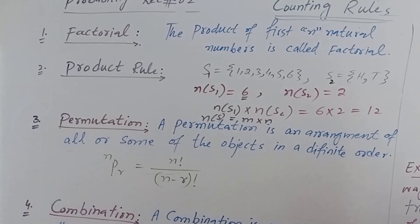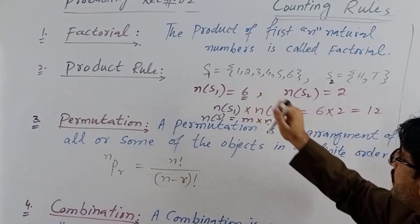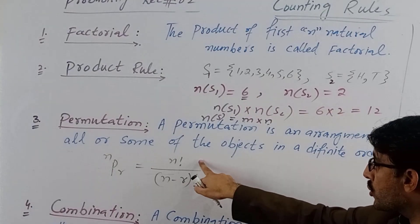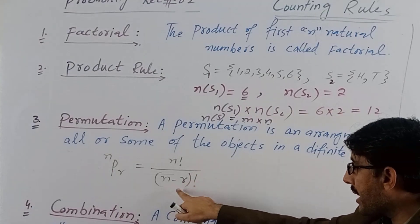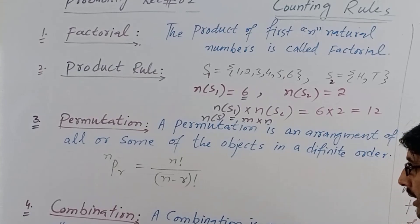So the permutation formula is nPr equals n factorial divided by (n minus r) factorial. Here n factorial is the product of n natural numbers, as we already discussed, and (n minus r) factorial is in the denominator.